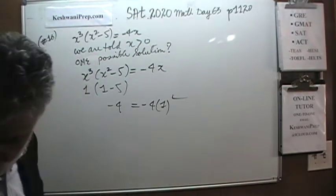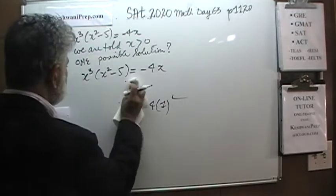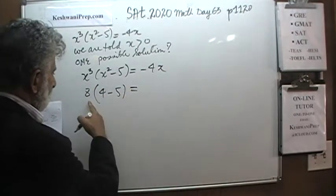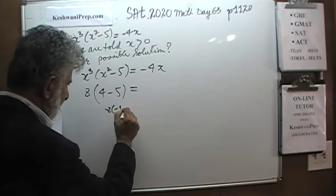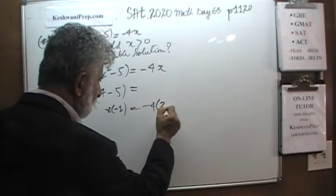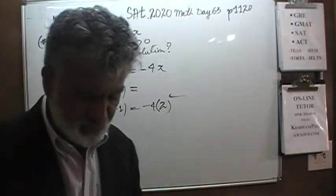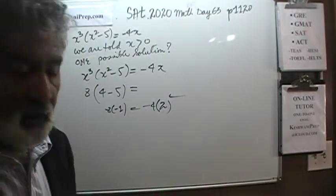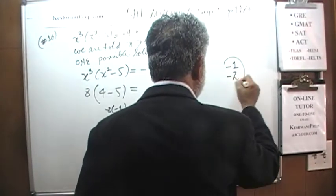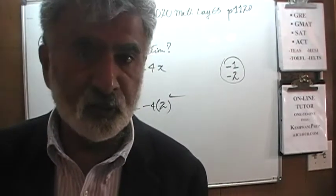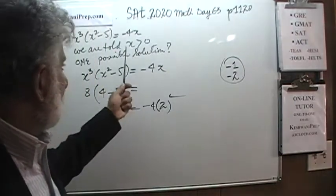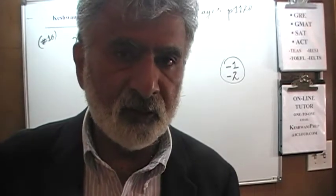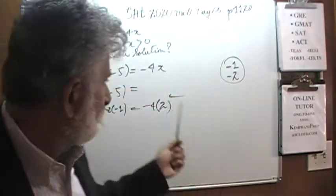So would 2. If you were to try 2: 2 cubed is 8, 2 squared is 4, and 4 minus 5 is negative 1. So here we get 8 times negative 1, and on the other side negative 4 times 2 — it works. You can plug in either 1 or 2. Why do they say x has to be positive? Because the solutions negative 1 and negative 2 also satisfy this equation, but it is not physically possible to grid in negative numbers on grid-in problems. So put in either 1 or 2.